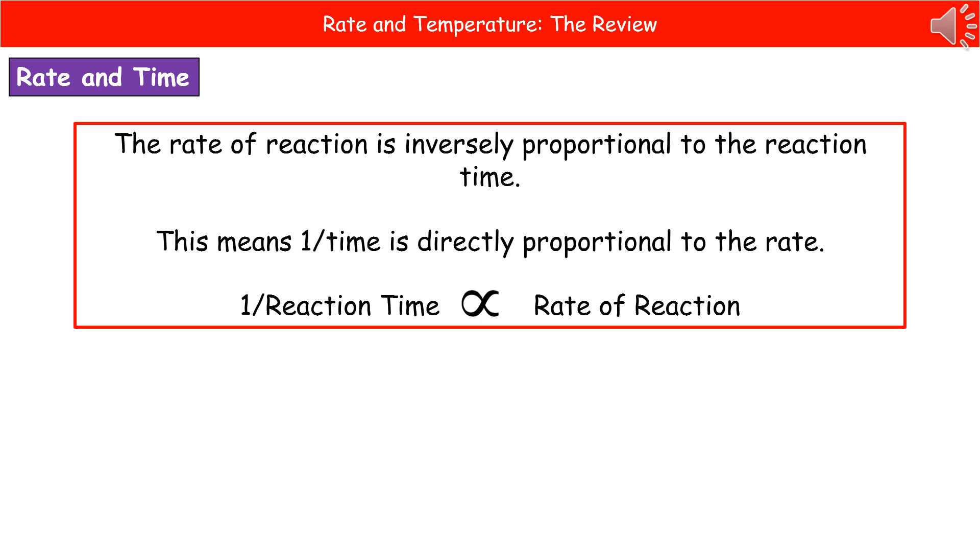What that actually means is that if you divide one by the time, then we end up with a directly proportional relationship to the rate. So we can summarize that using the symbol at the bottom there: one over the reaction time is directly proportional to the rate of reaction.